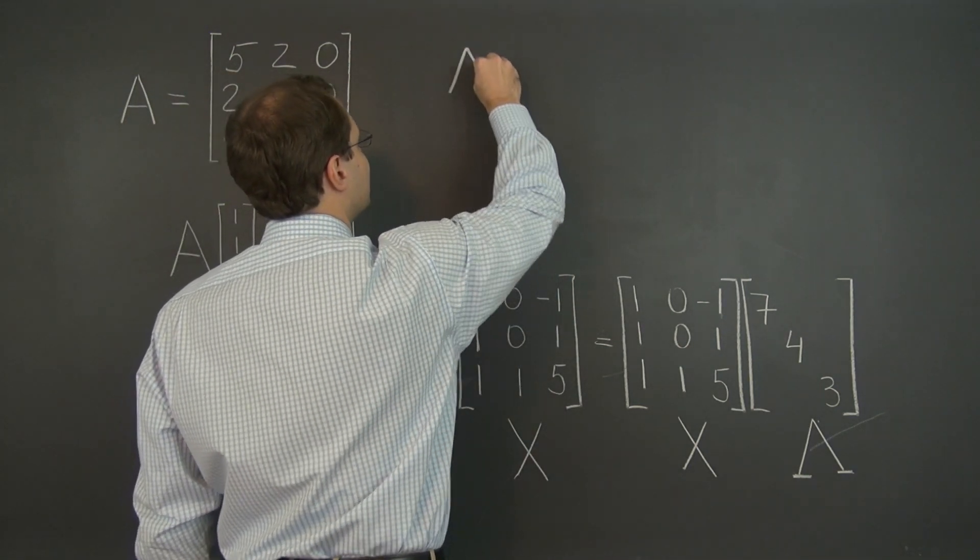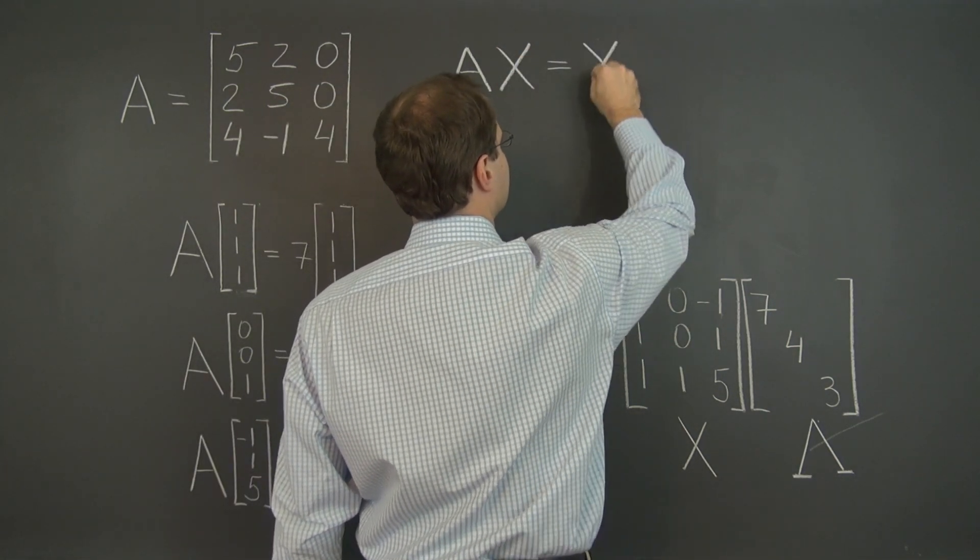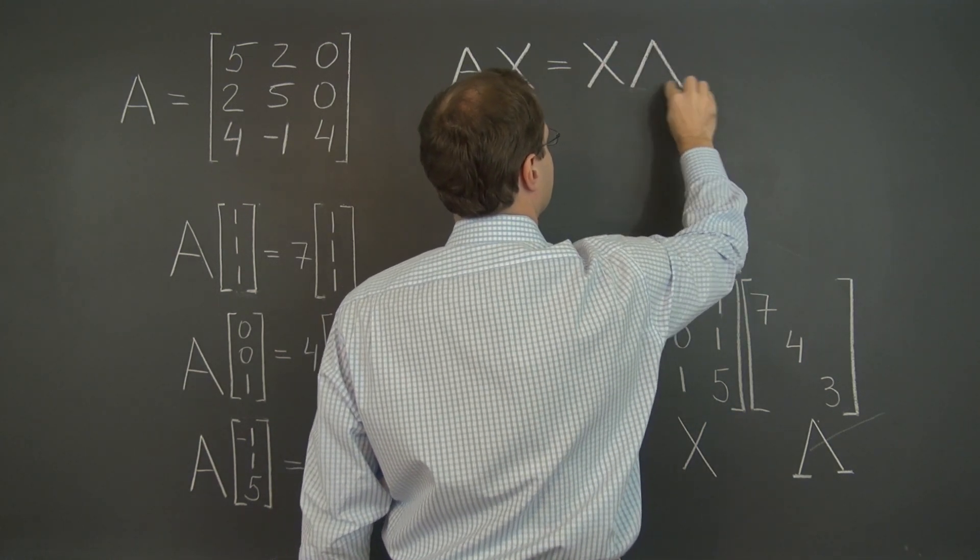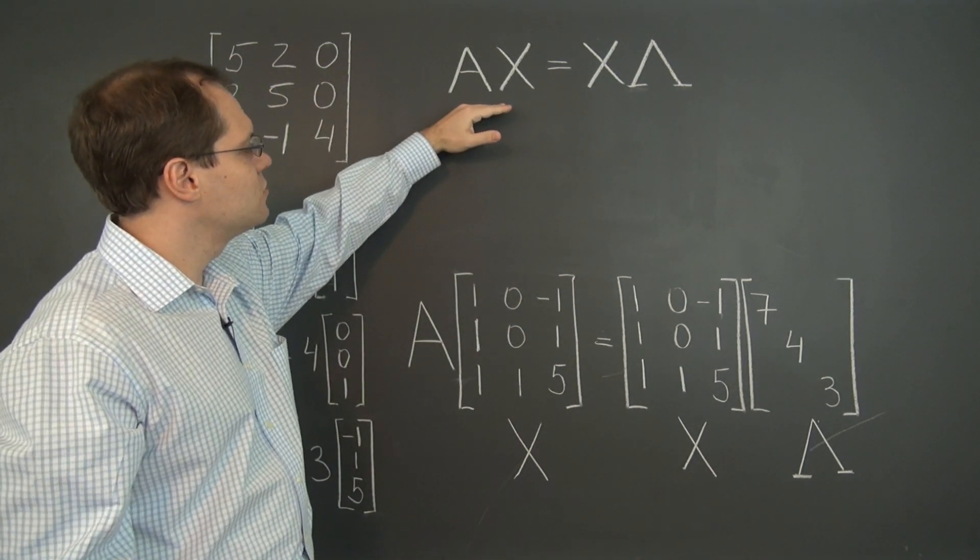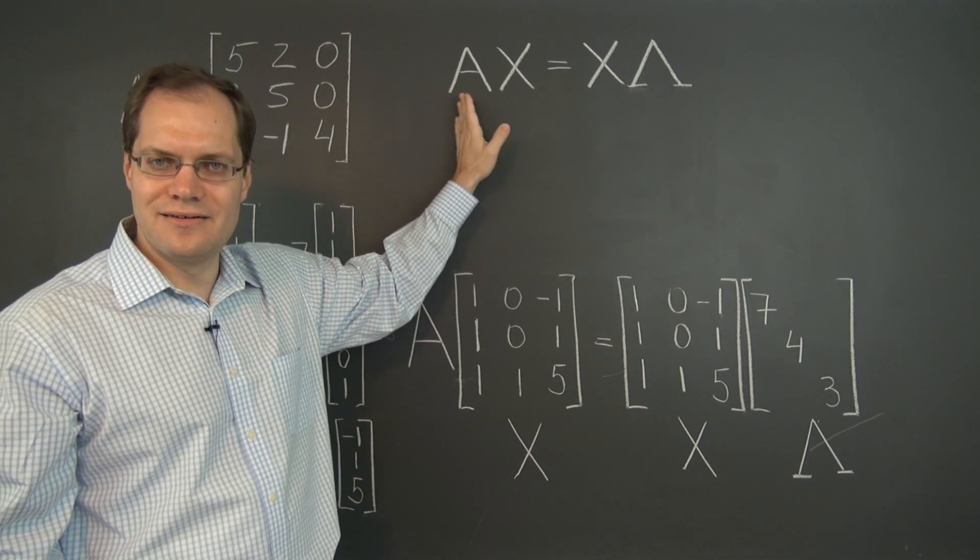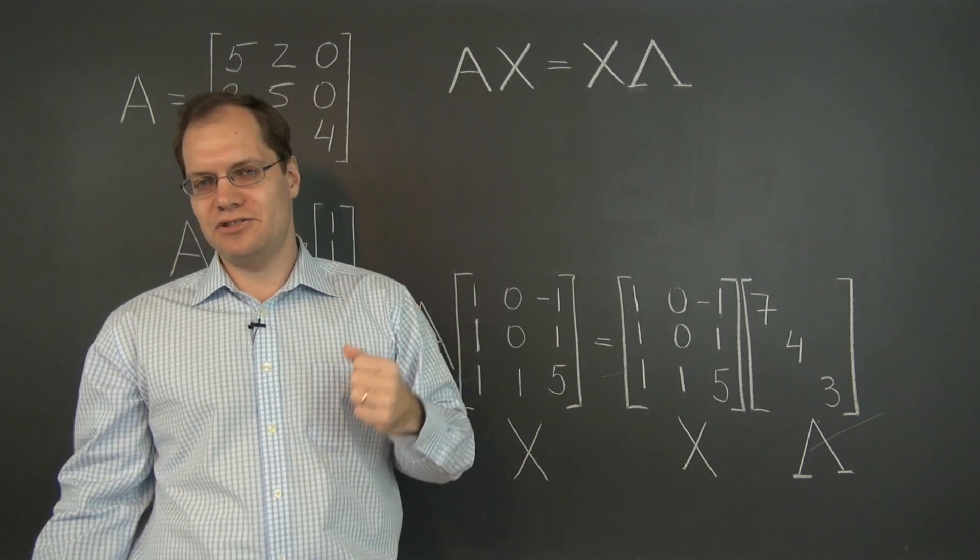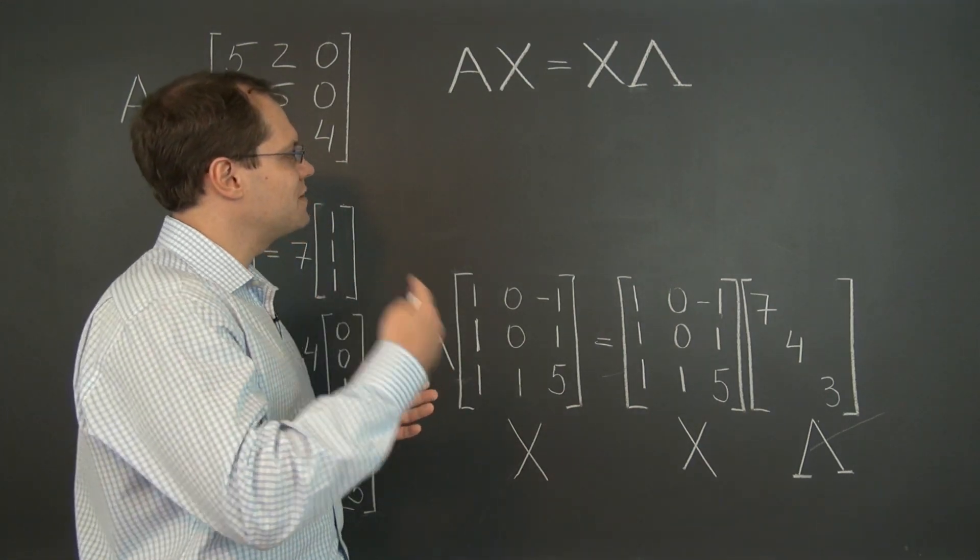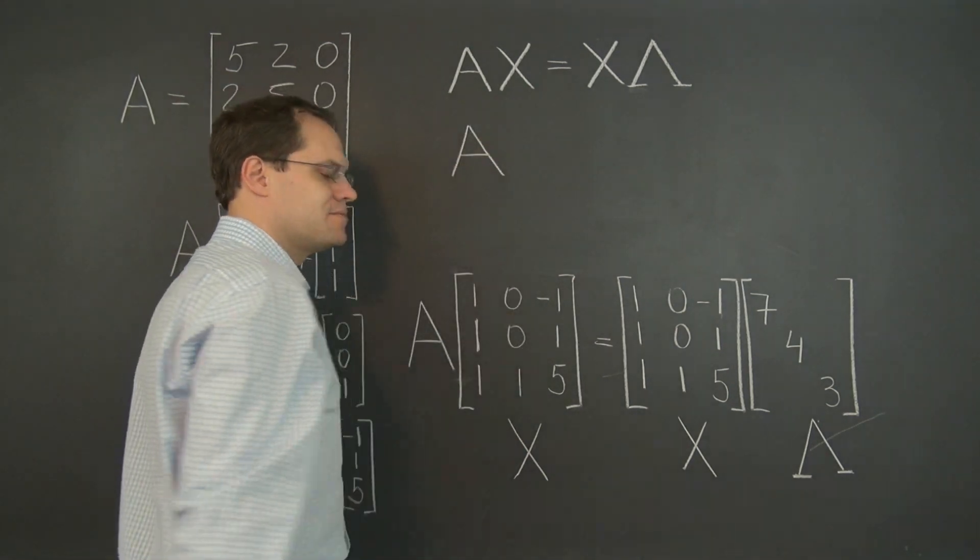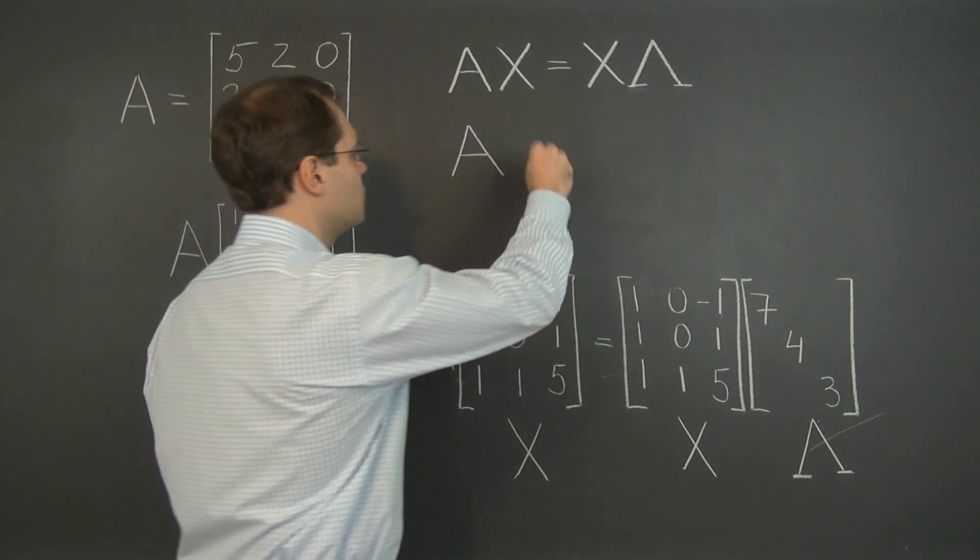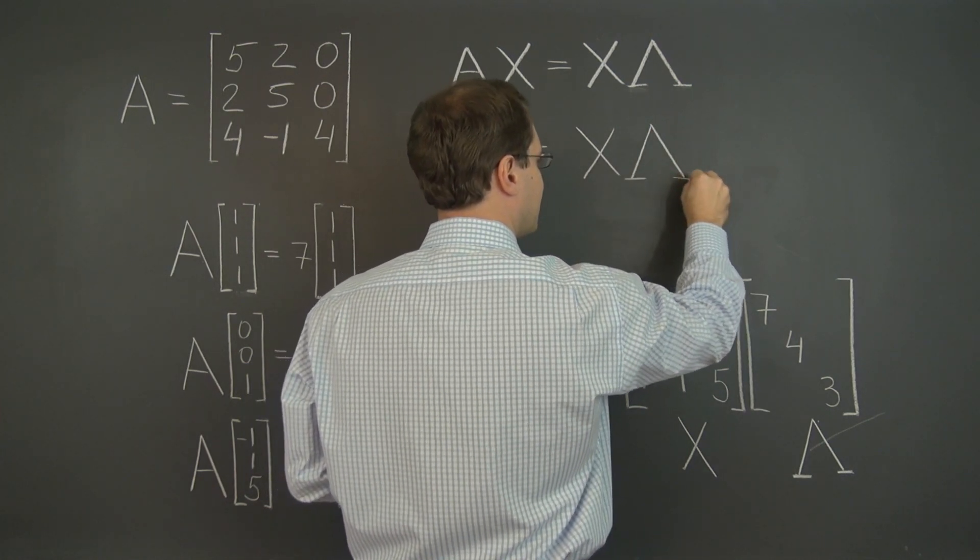What we have algebraically is AX equals X lambda. Alright, so we now have this identity and we're after a decomposition for A. We want A to be a product of other matrices. Why do we want that? Well, we're looking for a decomposition of the matrix A. And then in subsequent videos, of course, you'll see the fantastic utility of this way of thinking. And so multiplying both sides on the right by X inverse, we have that A equals X lambda X inverse.